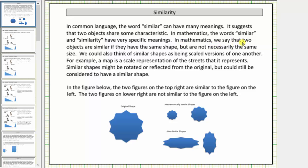In mathematics, we say that two objects are similar if they have the same shape but are not necessarily the same size. We could also think of similar shapes as being scaled versions of one another. For example, a map is a scale representation of the streets that it represents.